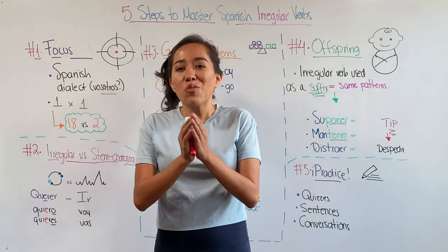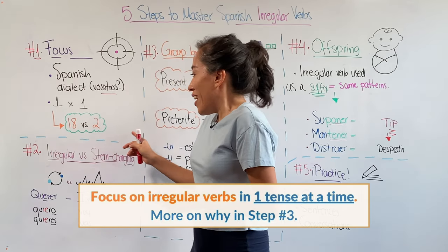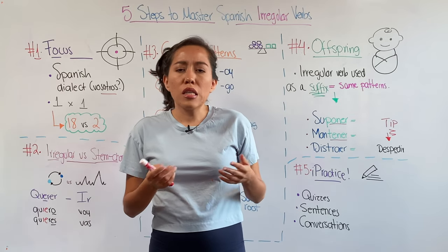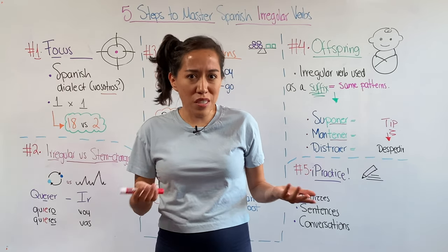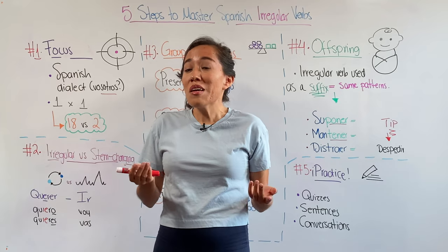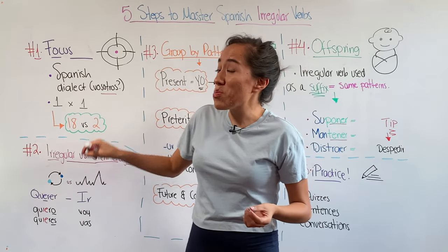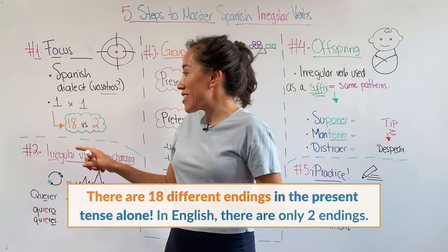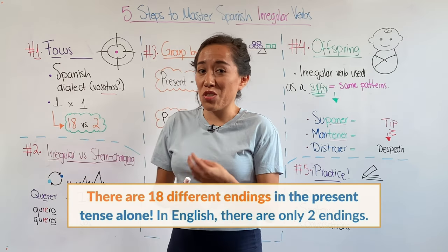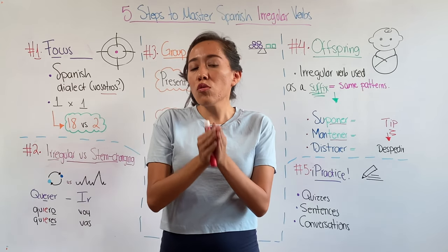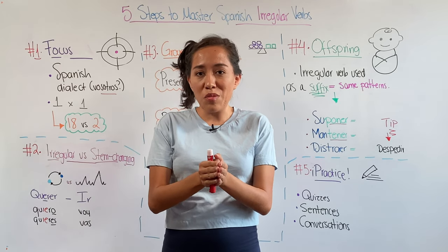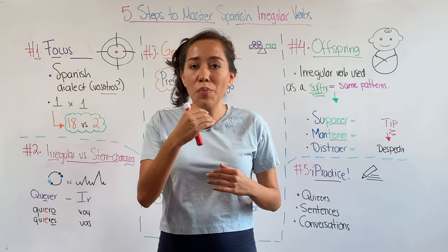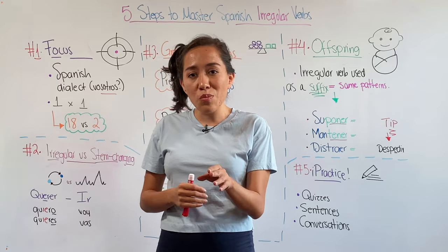Also, focus on one tense at a time. If I were to ask you what do you think is easier to conjugate — English or Spanish? Probably English, right? Do you know why? Because of the endings. In Spanish, the present tense requires 18 different endings. In English, you guys just have two. So when you focus on one tense at a time, you're not stretching yourself, but also you're able to start noticing patterns that are going to help you.